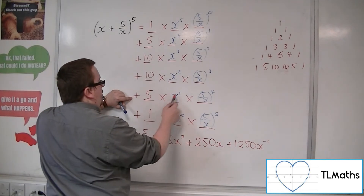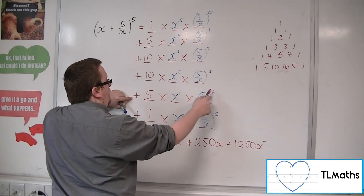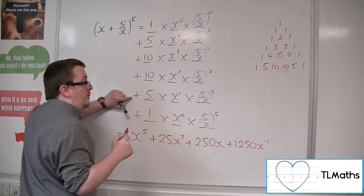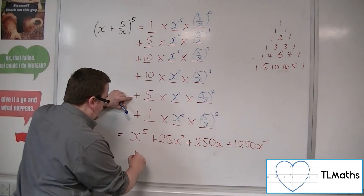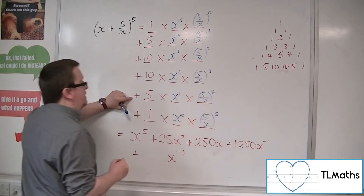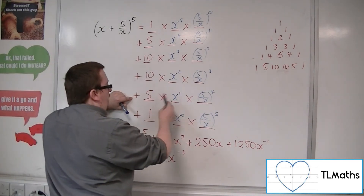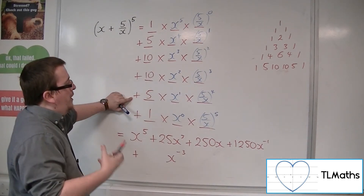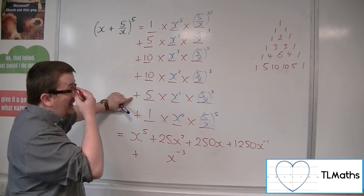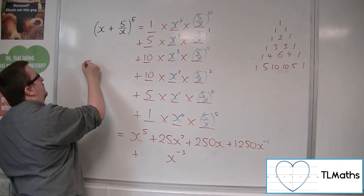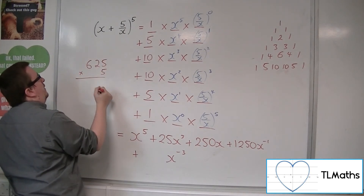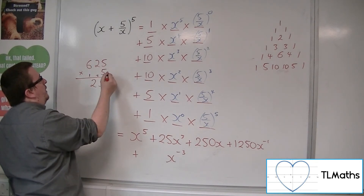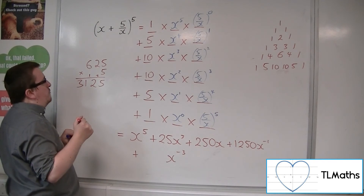Here we've got 5 times x times (5/x) to the power of 4, so we'll have x to the 4 in the denominator. x to the 1 divided by x to the 4 is x to the minus 3. Now 5 to the power of 4: 5 cubed was 125, so 5 to the 4 is 625. 625 times 5 — a little bit of long multiplication: 5 fives are 25, 2 fives are 10 plus 2 is 12, 6 fives are 30 plus 1 is 31. So that's 3125x to the minus 3.